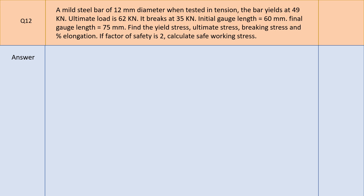Problem 1: A mild steel bar of 12 mm diameter when tested in tension — the bar yields at 49 kN, ultimate load is 62 kN, it breaks at 35 kN. Initial gauge length is 60 mm, final gauge length is 75 mm. Find yield stress, ultimate stress, breaking stress, and percentage elongation. If factor of safety is 2, calculate safe working stress.